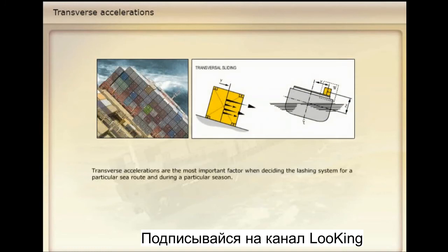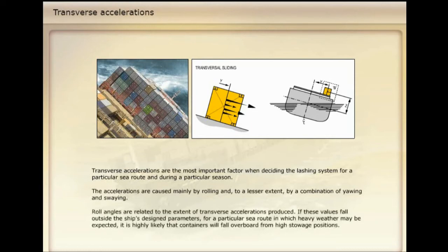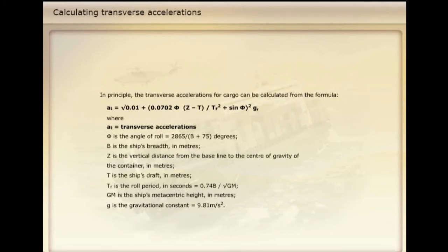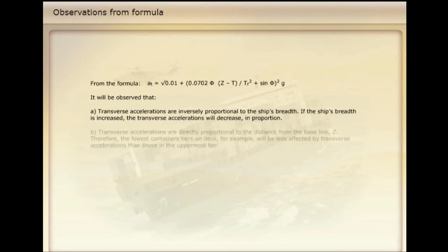Transverse accelerations are the most important factor when deciding the lashing system for a particular sea route and during a particular season. The accelerations are caused mainly by rolling, and to a lesser extent by a combination of yawing and swaying. Roll angles are related to the extent of transverse accelerations produced. If these values fall outside the ship's design parameters for a particular sea route where heavy weather may be expected, it is highly likely that containers will fall overboard from high stowage positions. In principle, transverse accelerations for cargo can be calculated from a formula, from which it will be observed that transverse accelerations are inversely proportional to the ship's breadth — if the ship's breadth is increased, the transverse accelerations will decrease in proportion.